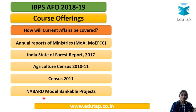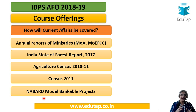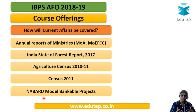There are also NABARD Model Bankable Projects with MCQs based on these. Lately we have seen that certain questions are directly picked up from these projects — for example, they may ask you the square feet required to house a particular animal. So what we have done is we have framed the most probable MCQs from these reports. You need to solve these MCQs, and there is a high probability that you might find exact questions in the paper as well.